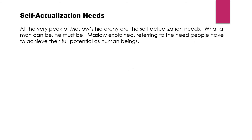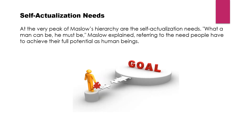Last but not least — self-actualization needs. At the very peak of Maslow's hierarchy are the self-actualization needs. 'What a man can be, he must be,' Maslow explained, referring to the need people have to achieve their full potential as human beings. After fulfilling all four initial needs, an individual requires self-actualization needs — meaning he wants to fuel his passion and reach his desired goals, looking for options on how to reach those goals.